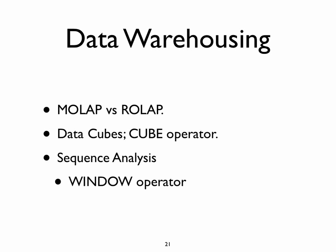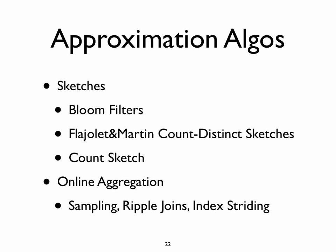We talked about data warehousing — in particular MOLAP versus ROLAP, different ways of representing data in a data warehouse. We talked about data cubes and in particular the cube operator. We talked about sequence analysis and in particular the window operator. The main two points of interest here are cube and window. From there we moved on to various ways of performing approximate computation over extremely large data sets. We talked about sketches, revisited bloom filters, and talked about two specific kinds of sketches: count distinct and the regular count sketch. We also talked about online aggregation strategies — how you can sample from data — a new kind of join called ripple join, and a new strategy for sampling from an index called index striding.